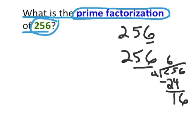We're going to bring down our 6. How many times does 4 go into 16? 4 goes a total of 4 times into 16 and we're left with a remainder of 0. So two factors of 256 are 4 and 64.